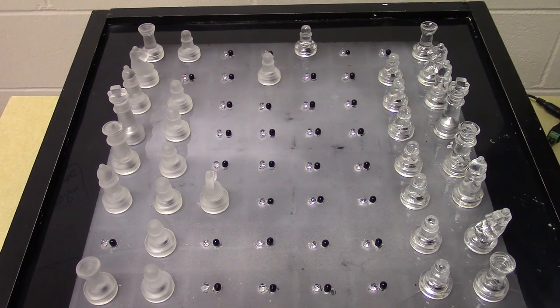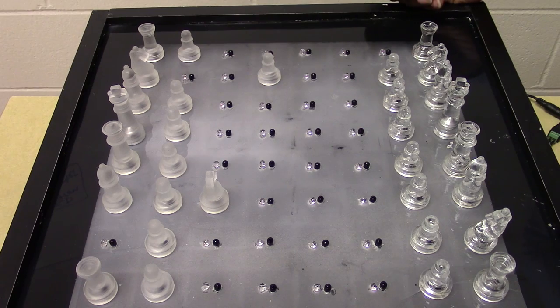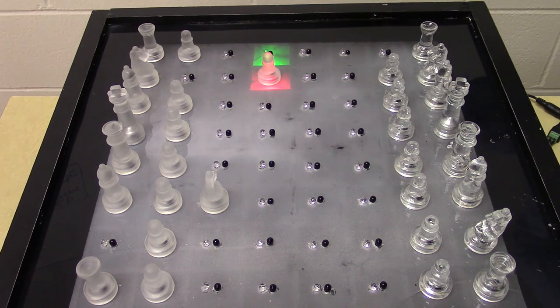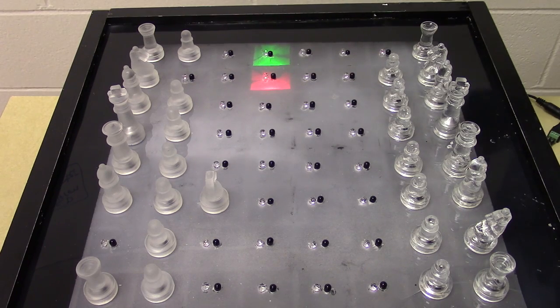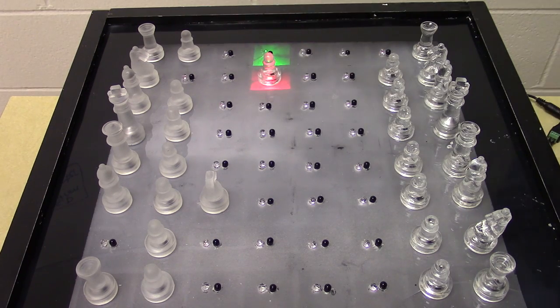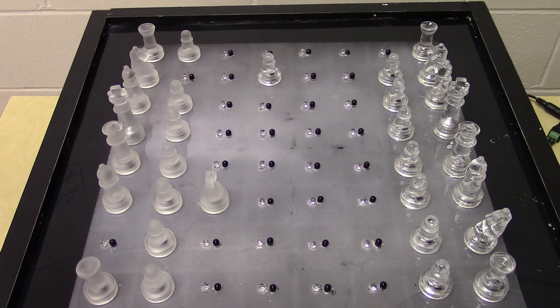Now to demonstrate what happens when you have the possibility to capture a piece. I lift my pawn here and the red square indicates a piece that can be captured. So I'm going to pick his piece up. The game recognizes his piece has been lifted and place my piece where that piece was taken from.